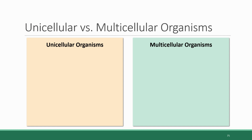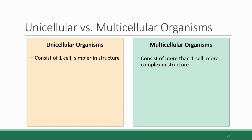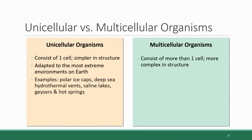All life on Earth is either unicellular or multicellular. Unicellular organisms consist of just one cell and are therefore simpler in structure. Multicellular organisms consist of more than one cell and are therefore more complex in structure. However, the simplicity of unicellular organisms gives them an advantage, which is the ability to adapt to some of the most extreme environments on Earth.